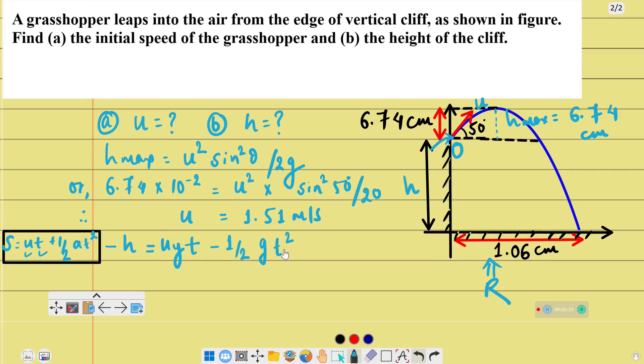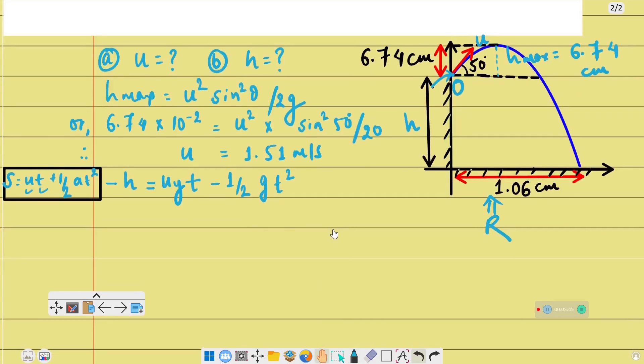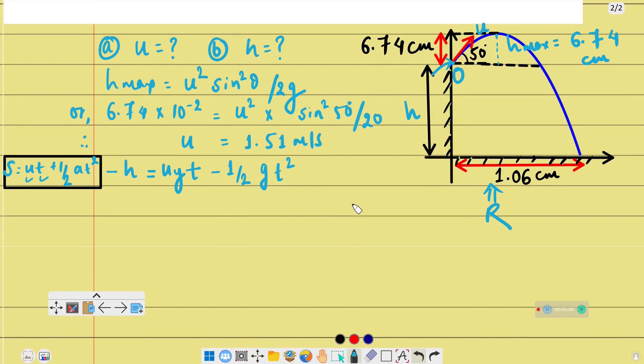The displacement we're considering is the height. For the horizontal range or horizontal displacement, the equation is x = u_x t + ½ a_x t². For horizontal direction, there is no force, so the acceleration along the horizontal axis is zero.